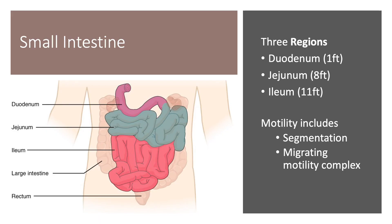To give you some idea of the lengths of the sections of the small intestine relative to one another: the duodenum, following the stomach, is the shortest by far at about one foot. The next section, the jejunum, is about eight feet, and then the longest is the lower portion of the small intestine, the ileum, at eleven feet.